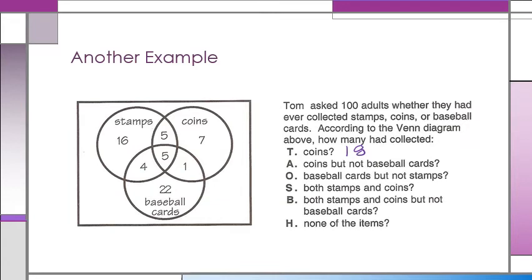Coins but not baseball cards would be everything that's not a baseball card. That 5 and 1 also collect baseball cards, but here we just want coins but not baseball cards, so it's 12.